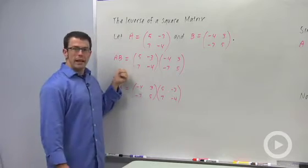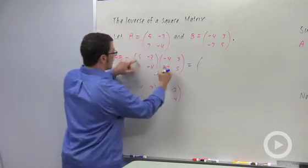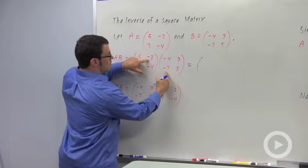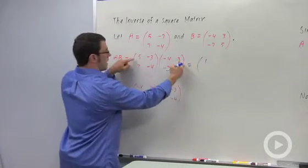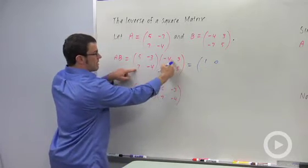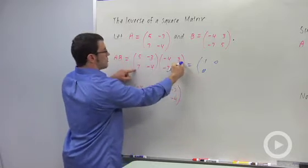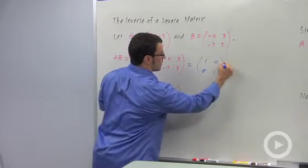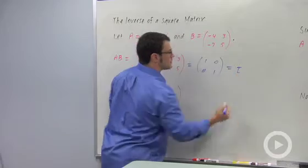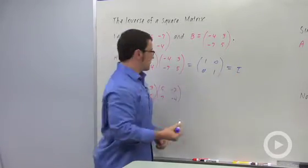First let's multiply A times B. So I have -20 plus 21 is 1. I have 15 minus 15 is 0. I have -28 plus 28 is 0. And I have 21 minus 20 is 1. This is the identity matrix, I. So when I multiply A times B, I get the identity matrix.